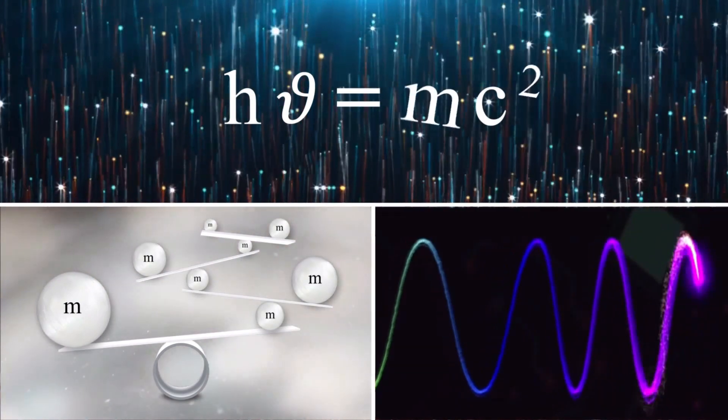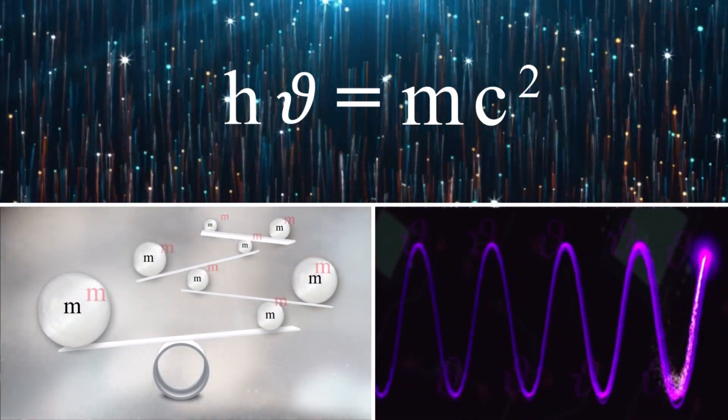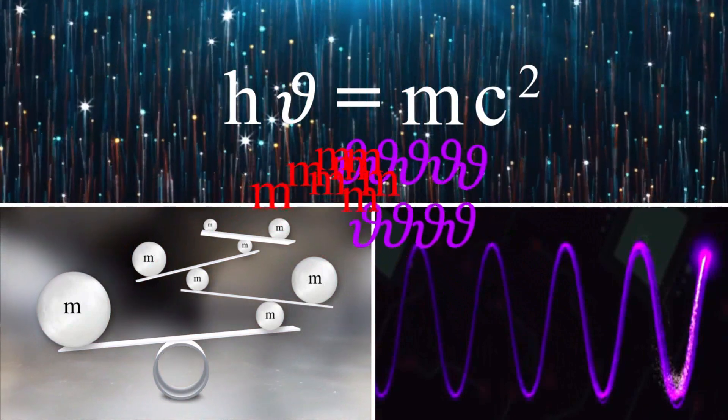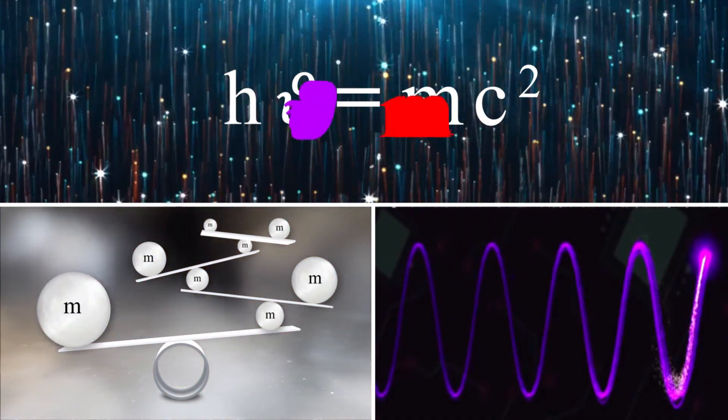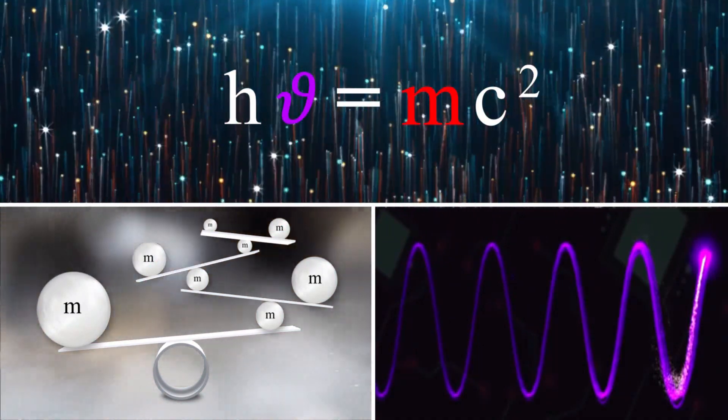However, in the equality of h nu equal mc squared, the variables are frequency and mass that these variables are completely heterogeneous.